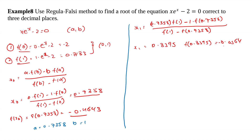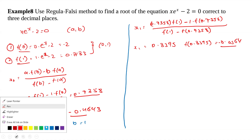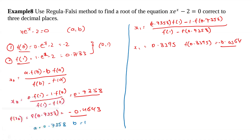We substitute 0.8395 in the function: f(0.8395) is equal to minus 0.0564. Here also we got a negative value, so a will be changed. Now a is equal to 0.8395 and b is equal to 1.